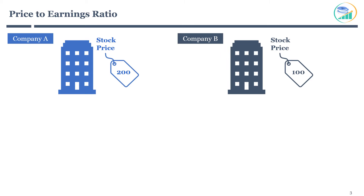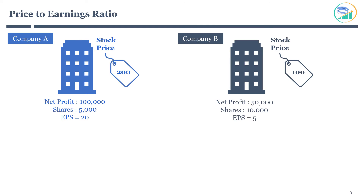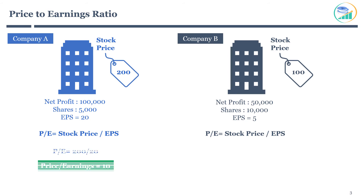A low share price does not mean a stock is undervalued. To understand which stock is cheaper, you must look at both companies' earning capabilities with respect to stock price. Company A has a net profit of $100,000. With 5,000 shares issued, EPS equals net profit divided by total shares, giving an earnings per share of $20. Company B has a net profit of $50,000. With 10,000 shares issued, you get an earnings per share of $5.